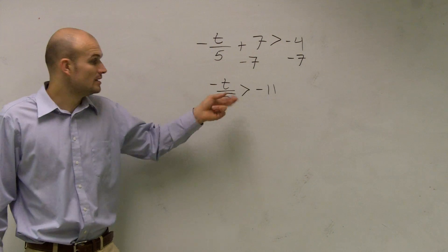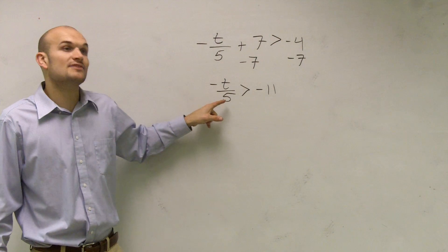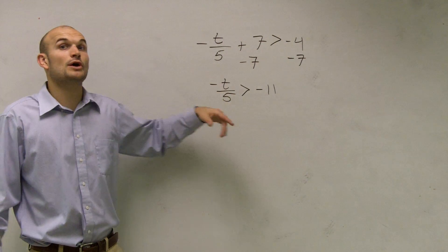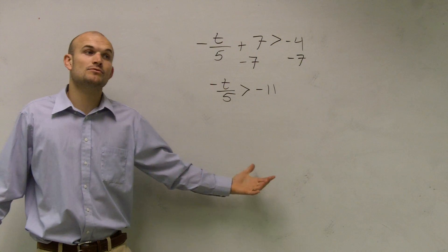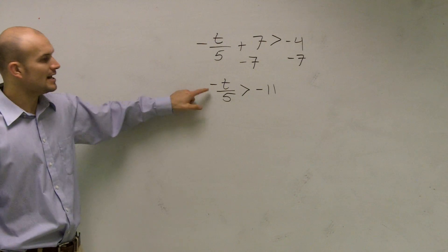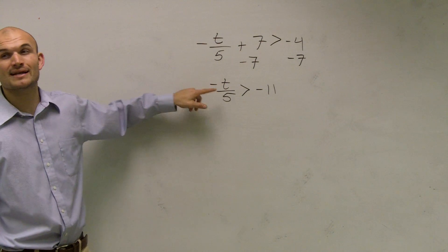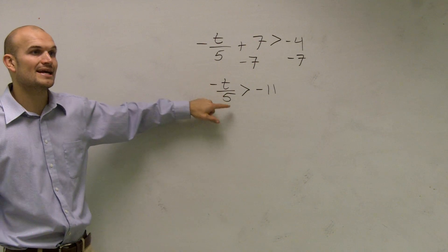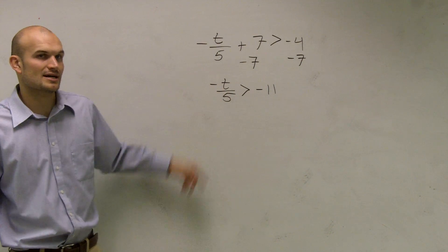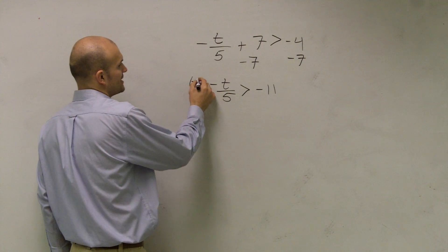Now what's happening to my variable? My variable is being divided by 5. So to undo division by 5, we have to multiply by 5. Now the other thing I notice is this is a negative t. I want to get rid of that negative symbol. So if I multiply by a negative 5, the negatives will cancel out as well. So I'm going to multiply by a negative 5.